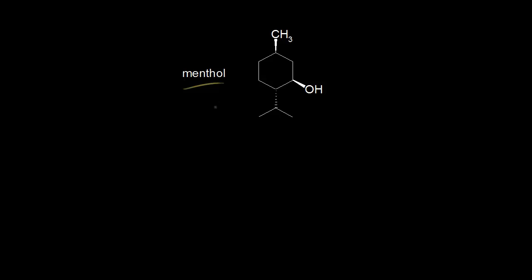The first thing we have to do is assign numbers to our substituents on the ring. How you assign numbers does not have to follow IUPAC nomenclature. For example, I'm going to call this carbon one, this carbon two, this carbon three, and this carbon four. If you already know how to name this compound, you'll know that's not how to number it according to IUPAC nomenclature. But this numbering system is just to help us draw our chair conformations.